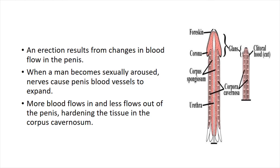An erection results from changes in blood flow in the penis. When a man becomes sexually aroused, nerves cause the blood vessels of the penis to dilate. More blood flows in and less flows out. This leads to hardening of the tissue in the corpus cavernosa, resulting in erection.